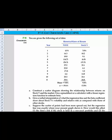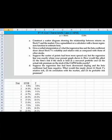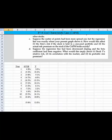Now on Part A it says, construct a scatter diagram showing the relationship between returns on Stock Y and the market. Use a spreadsheet or calculator with a linear regression function to estimate beta. I'm going to slide the screen down. Now, I've copied that data into Excel already, so we can get started on estimating this using linear regression. And here's how I'm going to do it.